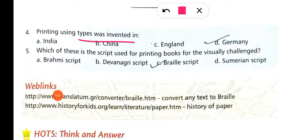Printing using movable type was invented in Germany. The script used for printing books for visually challenged people is called Braille. So I am ending this video here.